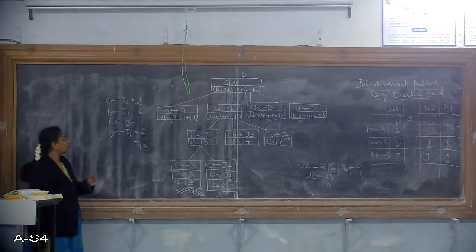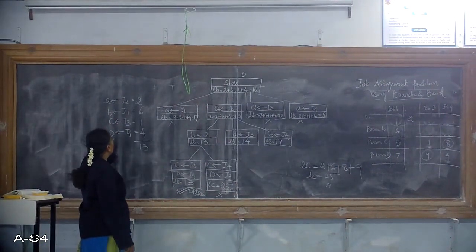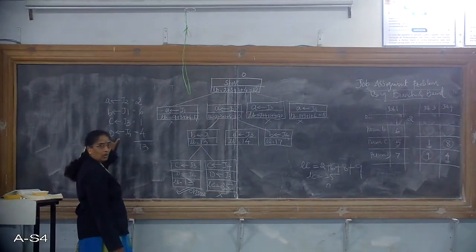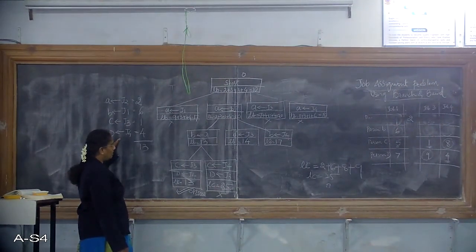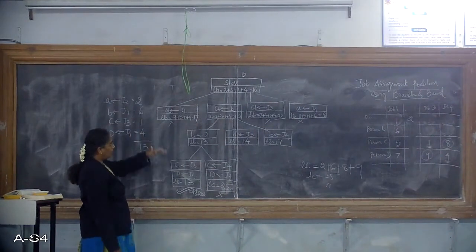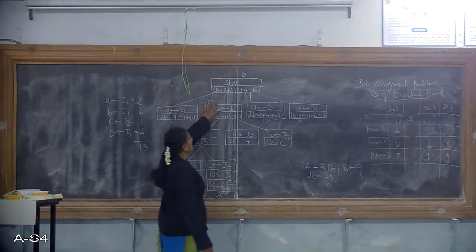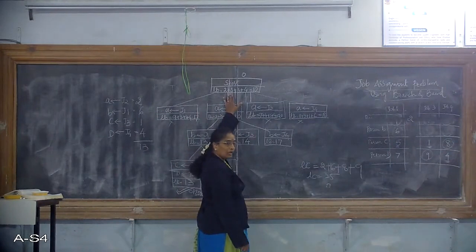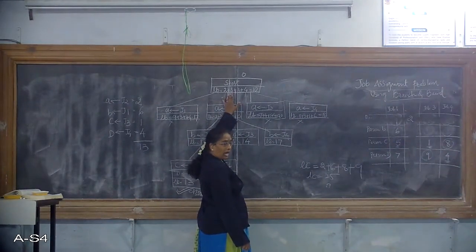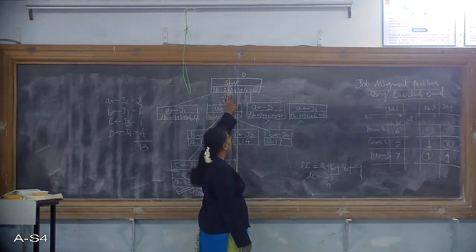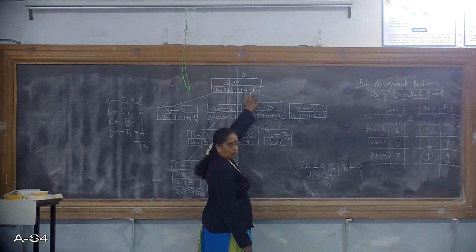This is how the job assignment problem is solved using branch and bound technique. At the zeroth level, we simply picked the smallest value from each row and added those values. The sum is the lower bound value for the zeroth level node, indicating no job is assigned to any person yet.